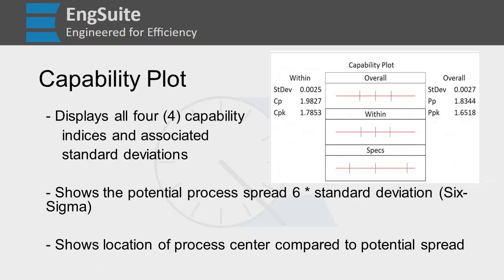Our final plot in the six-pack is the capability plot. This displays all four capability indices and the associated standard deviations. It shows your potential process spread, which is six times the standard deviation. That's where six sigma comes from.